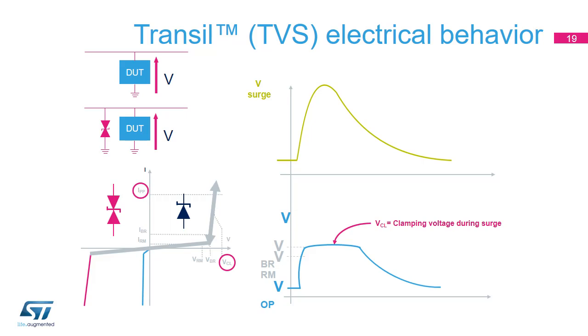The increase in current in the transil, up to the peak current IPP, causes the voltage to increase slightly and reach a value called the clamping voltage, or VCL. Once the peak value is passed, the current decreases and the breakdown voltage is reached.